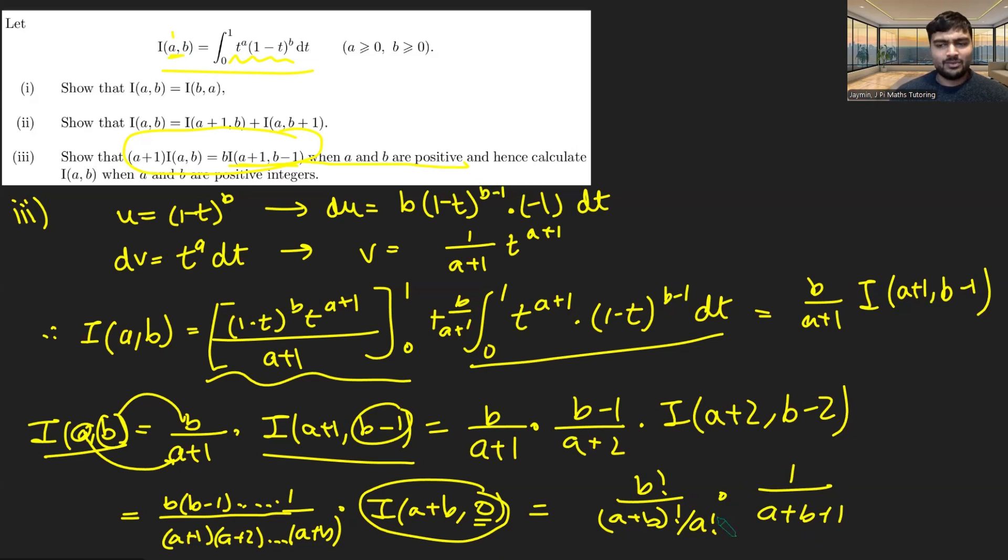And so that would be your answer. And if you want to, you can rearrange this or rewrite this as 1 over a+b+1 times (a+b) choose a. Just another way to write your answer. But that would be our solution here. Pretty cool that we can evaluate this integral for arbitrarily large positive integer values of a and b by using this formula.